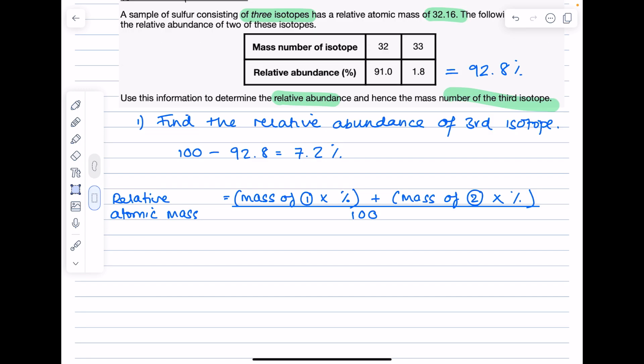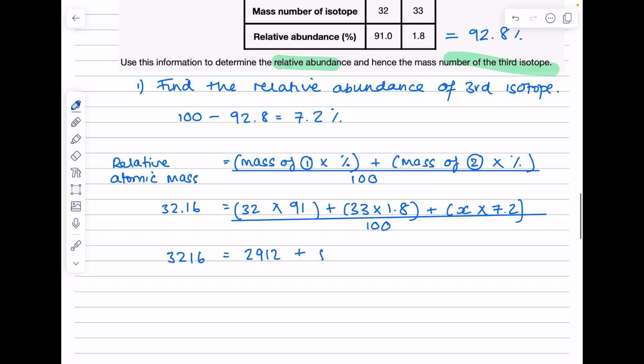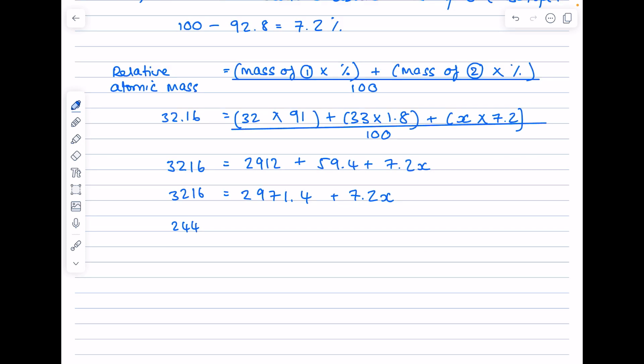Then we use the equation from before to find out the mass number of the third isotope. We know the relative atomic mass is 32.16. The mass number of isotope one was 32, we're using the table times by its relative abundance. We're after the mass number of that third isotope, so there's our x value. We just calculated its relative abundance. Now it's just a matter of rearranging. Multiply both sides by 100. Do 32 times 91. Take 2971.4 away from both sides, and then finally divide both sides by 7.2. Your final answer is actually 34.